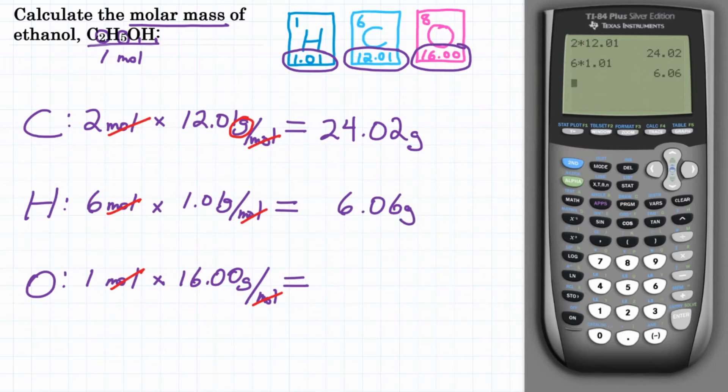And then for oxygen, we could punch this in our calculator. It will just be 1 times 16.00, so we're going to get 16.00 here.